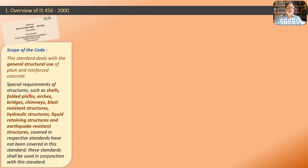Special requirements of structures such as shells, folded plates, arches, bridges, chimneys, blast resistant structures, hydraulic structures, liquid retaining structures, and earthquake resistant structures — covered in their respective standards — have not been covered in IS 456. Those standards shall be used in conjunction with IS 456, because this code provides basic requirements and basic standards for general purpose use of plain and reinforced concrete.